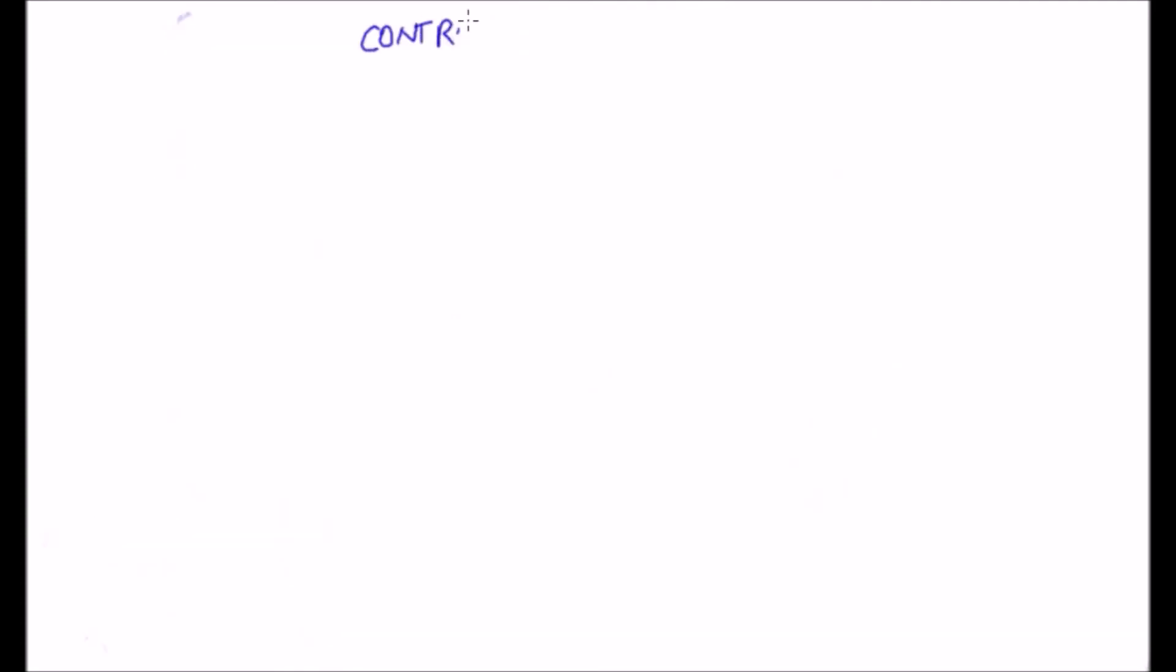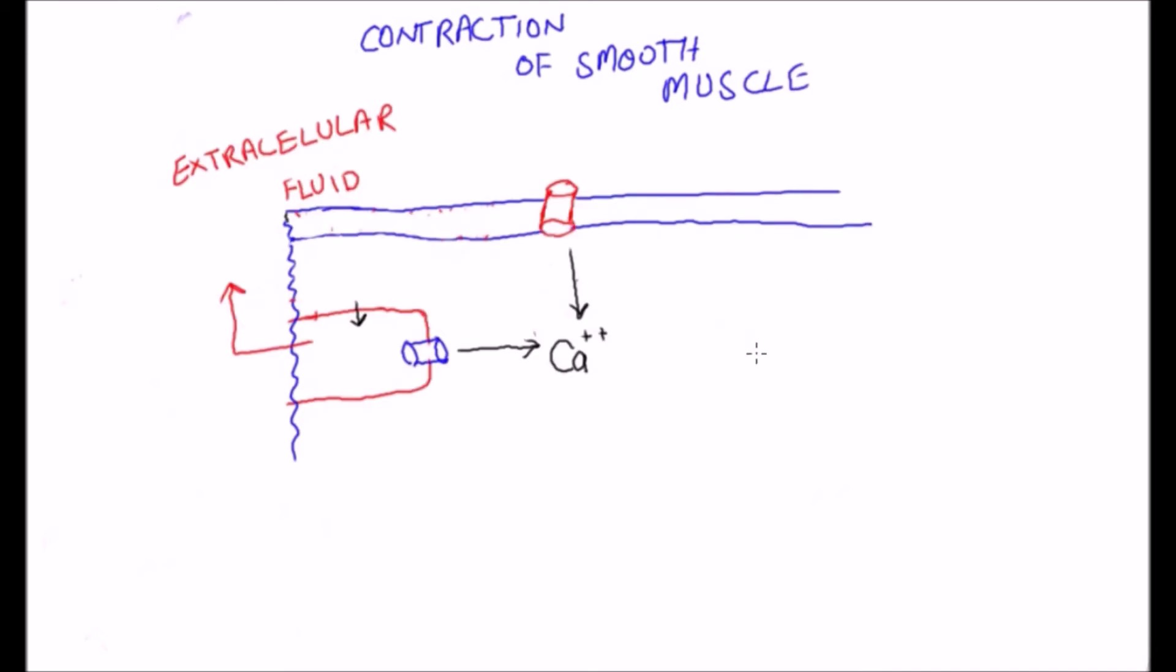In place of troponin, smooth muscle cells contain a large amount of another regulatory protein called calmodulin. Calcium concentration in the cytosolic fluid of smooth muscle increases as a result of the influx of calcium from extracellular fluid through calcium channels and/or release of calcium from sarcoplasmic reticulum.